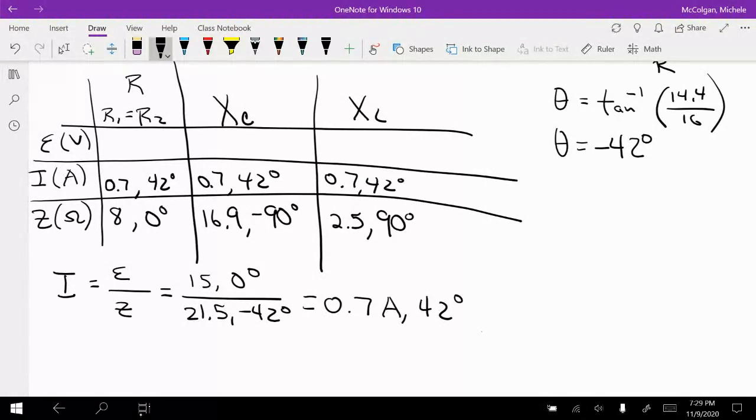And this is total. So this is 21.5 and negative 42, 0.7 and 42 degrees.